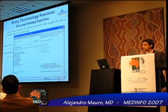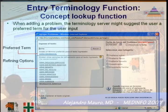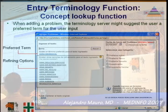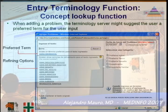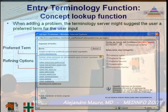One of the functions of the entry terminology is the concept local function. When adding a problem, the terminology server may suggest the user a preferred term for their input. In this slide, the user has entered 'asthma' alone and the terminology server indicates the preferred term is 'bronchial asthma,' and also shows some refining options if the user wants to be more detailed. These refining options are dynamically built up.